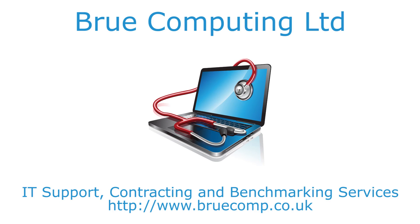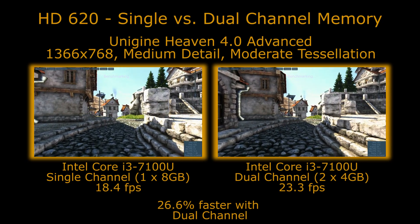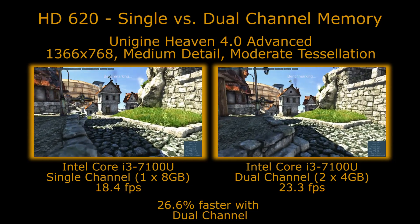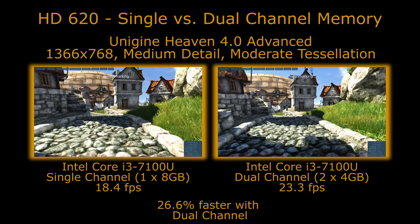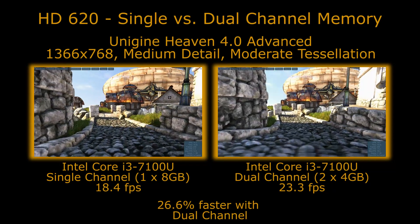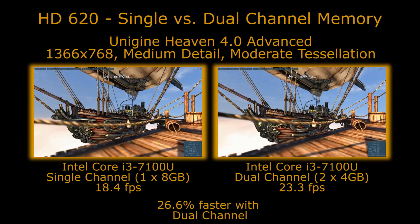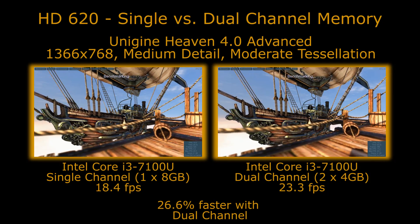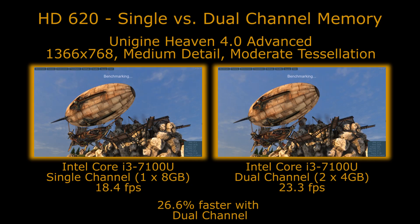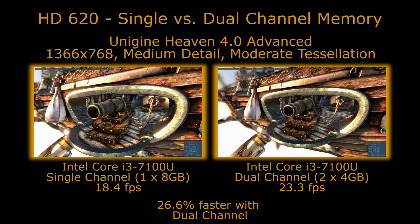Hi, I'm James and in this video I'm taking a look at the difference with Intel HD 620 graphics between single channel and dual channel memory. We're using Unigine Heaven, same as our i3, i5, and i7 comparison, to show the difference here. We are using the i3 7100U both in an HP laptop with a single 8GB DIMM module and a Dell laptop with a pair of 4GB DIMM modules.